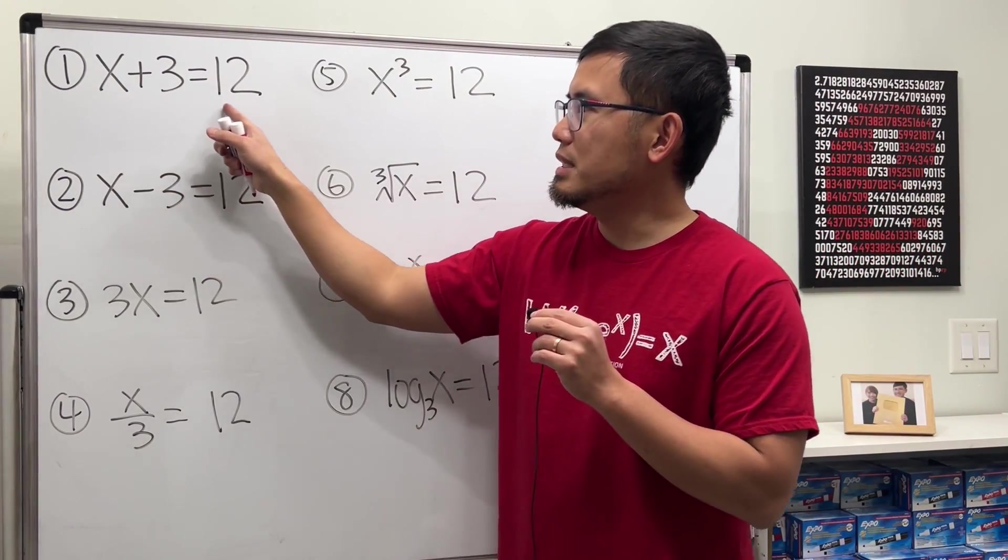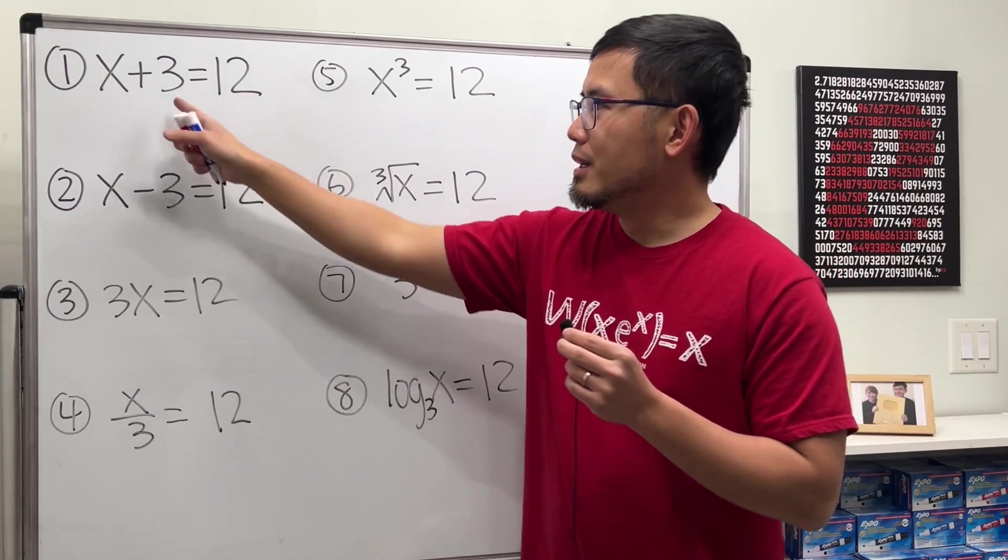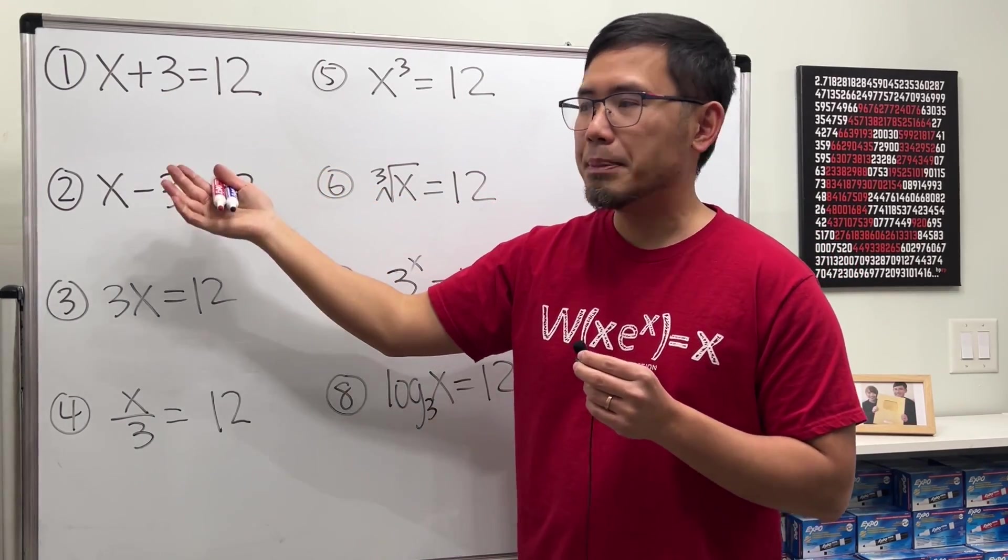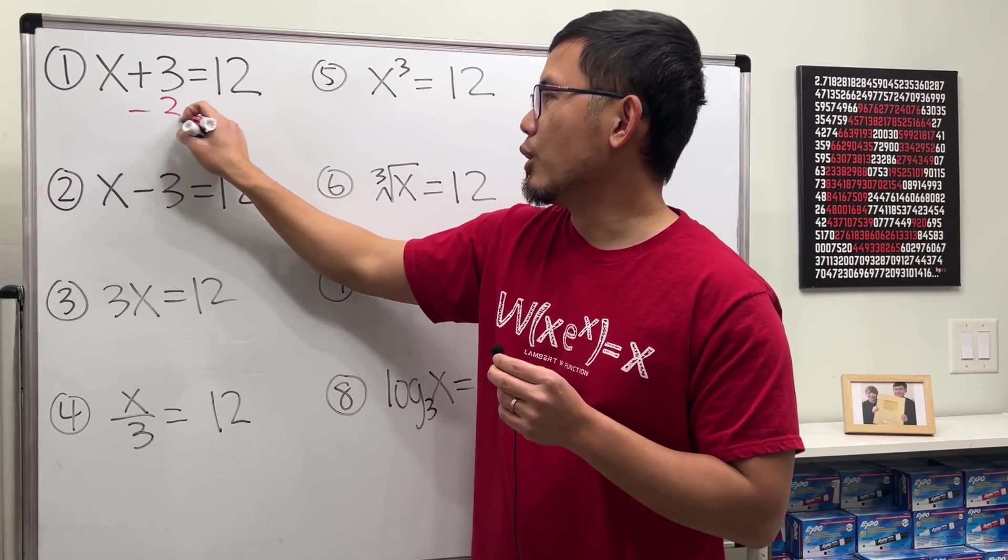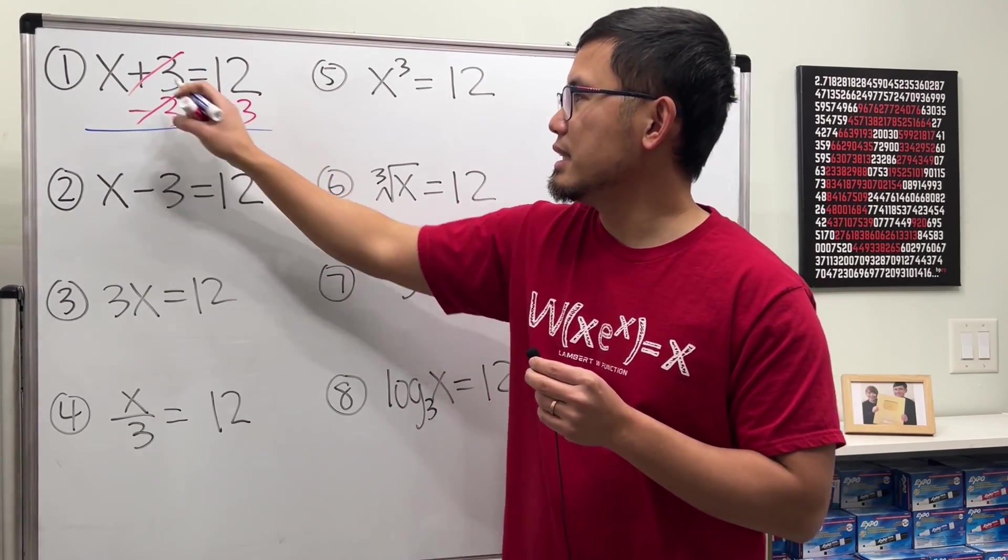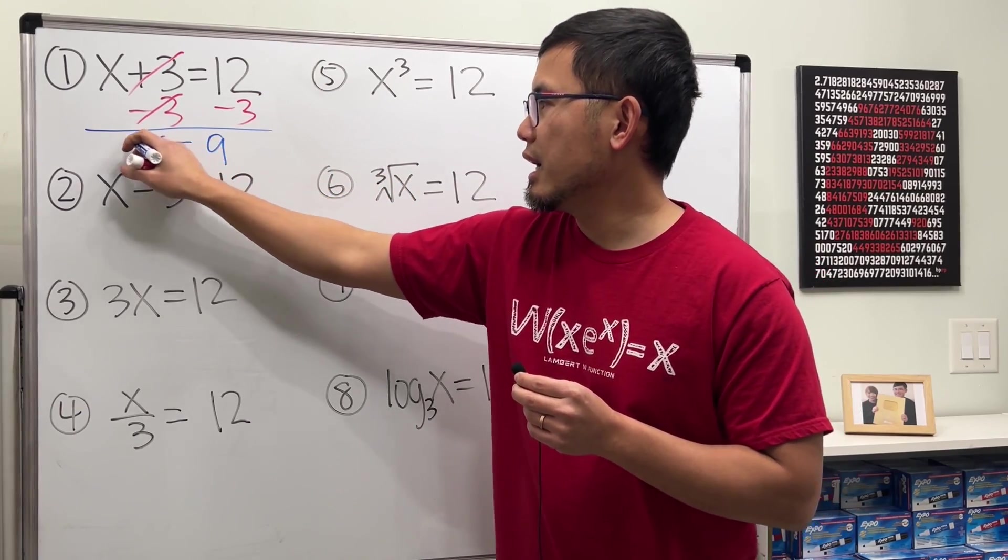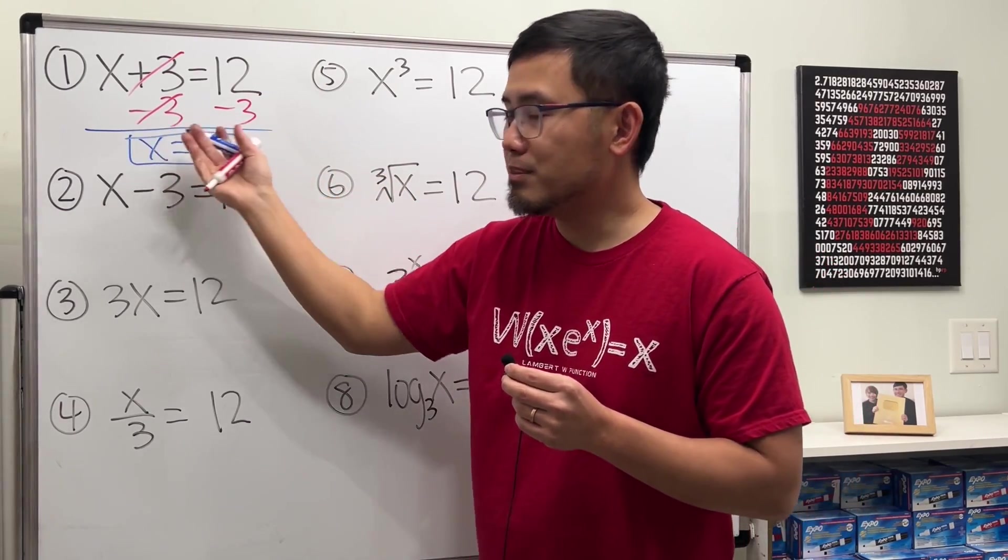We have x plus 3 equals 12. You always want to do the opposite. See, we have plus 3. The opposite of that is minus 3. So minus 3 on both sides, cancel, and you will get x equals 12 minus 3, which is 9, and you are done for that. One step, as I told you.